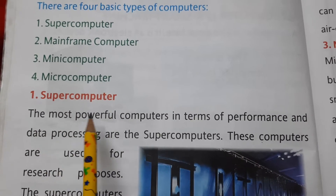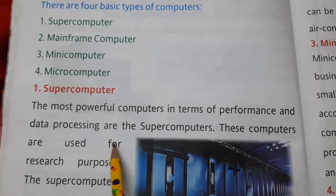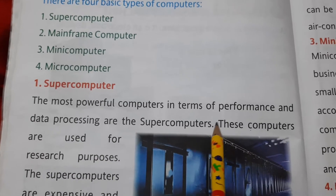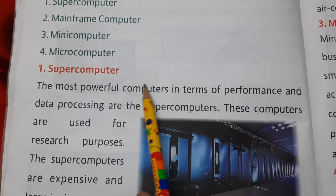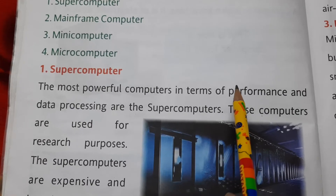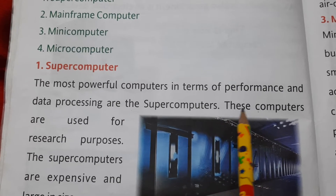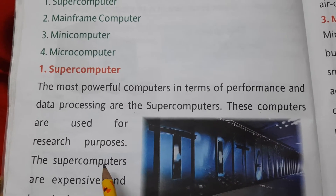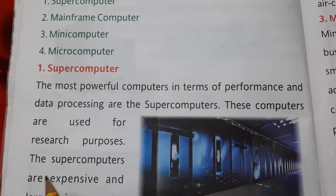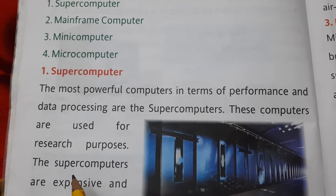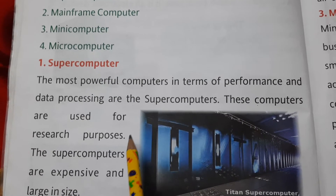Number 1: Supercomputer. The most powerful computers in terms of performance and data processing are the supercomputers. These computers are used for research purposes. They are very powerful, very fast, and they do their work very quickly. They are used for various research purposes — when scientists are trying to find something, like a cure for any disease.